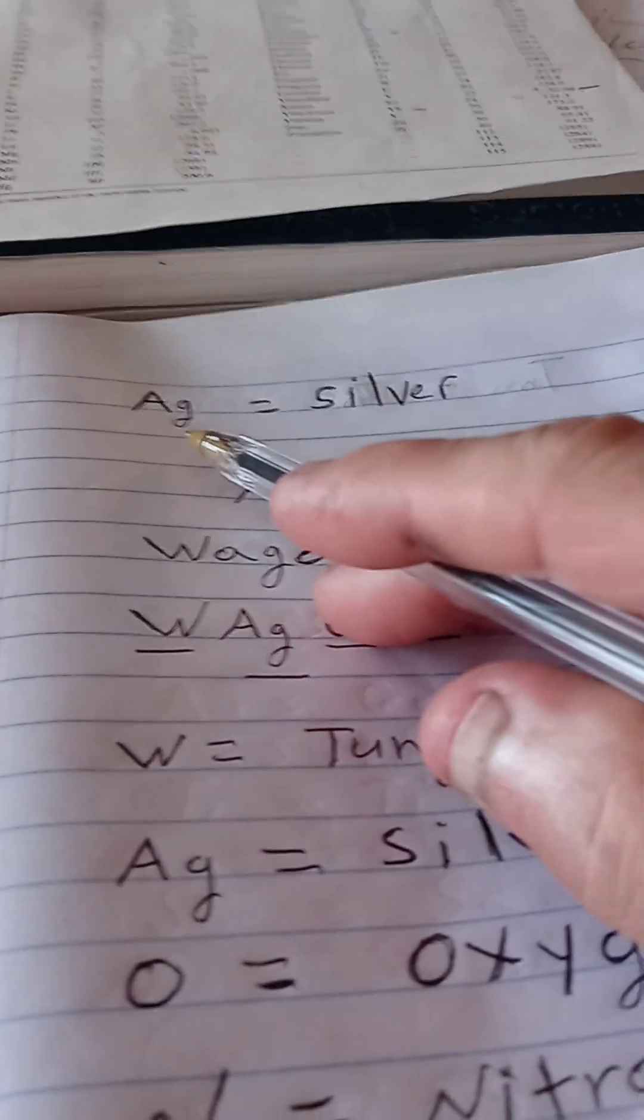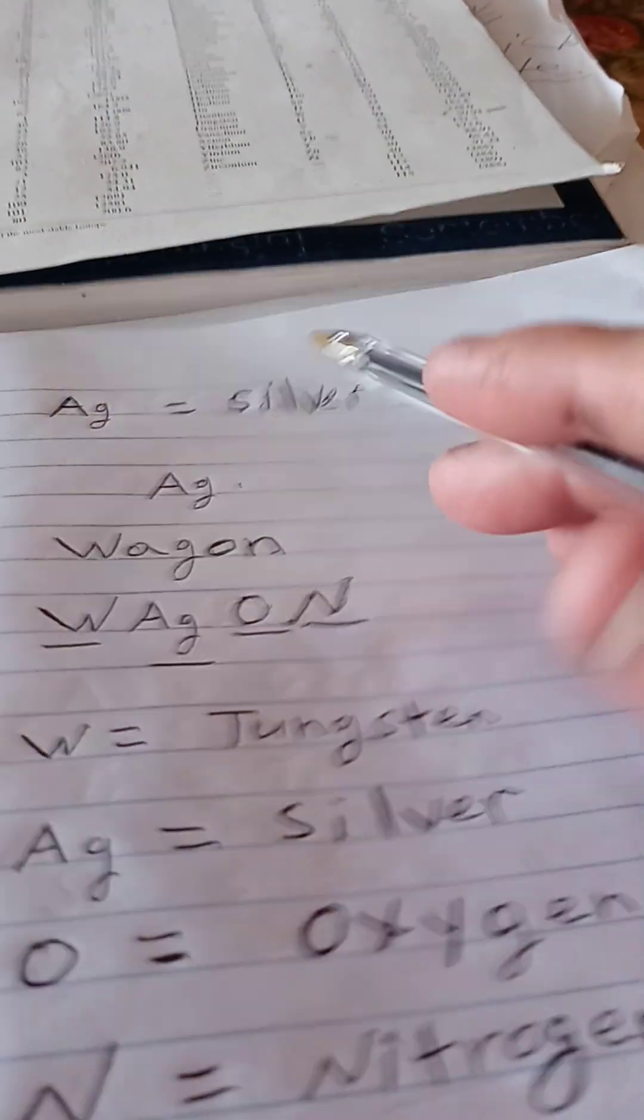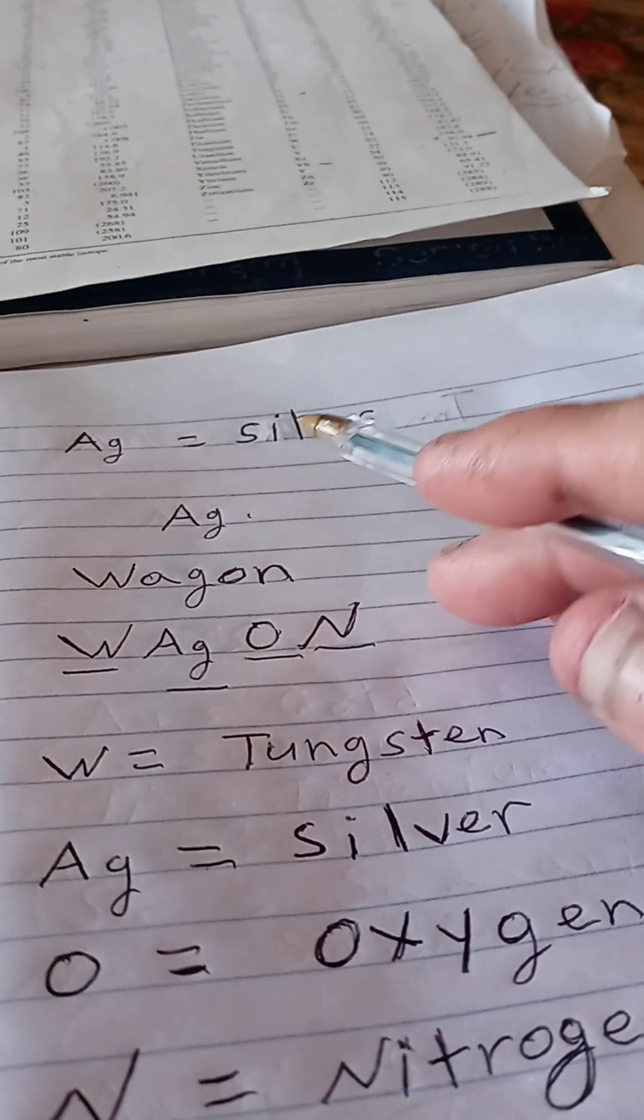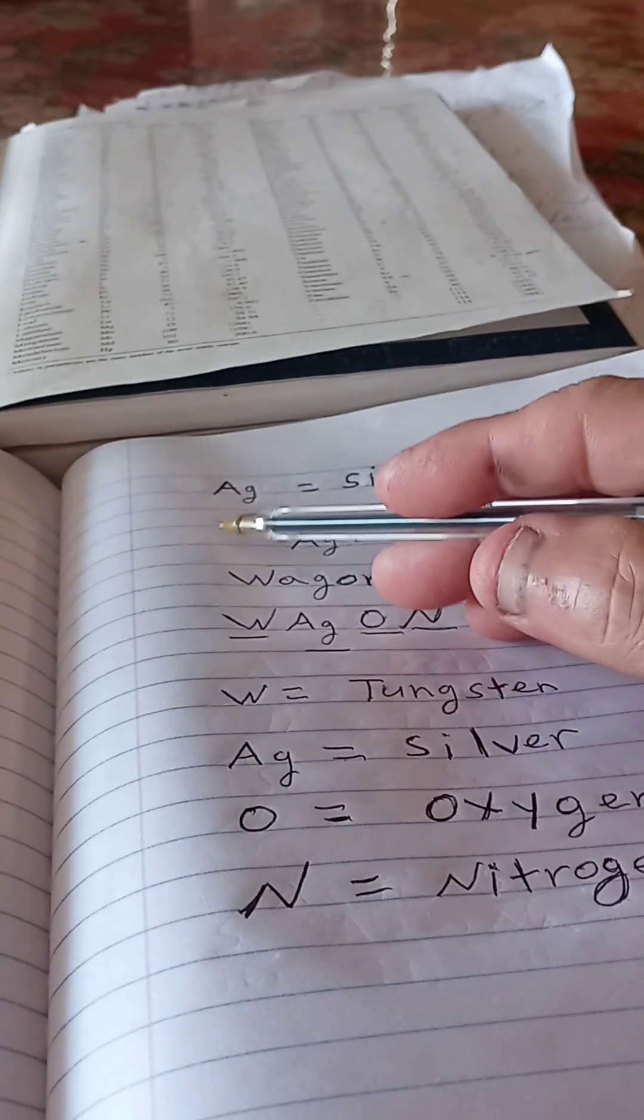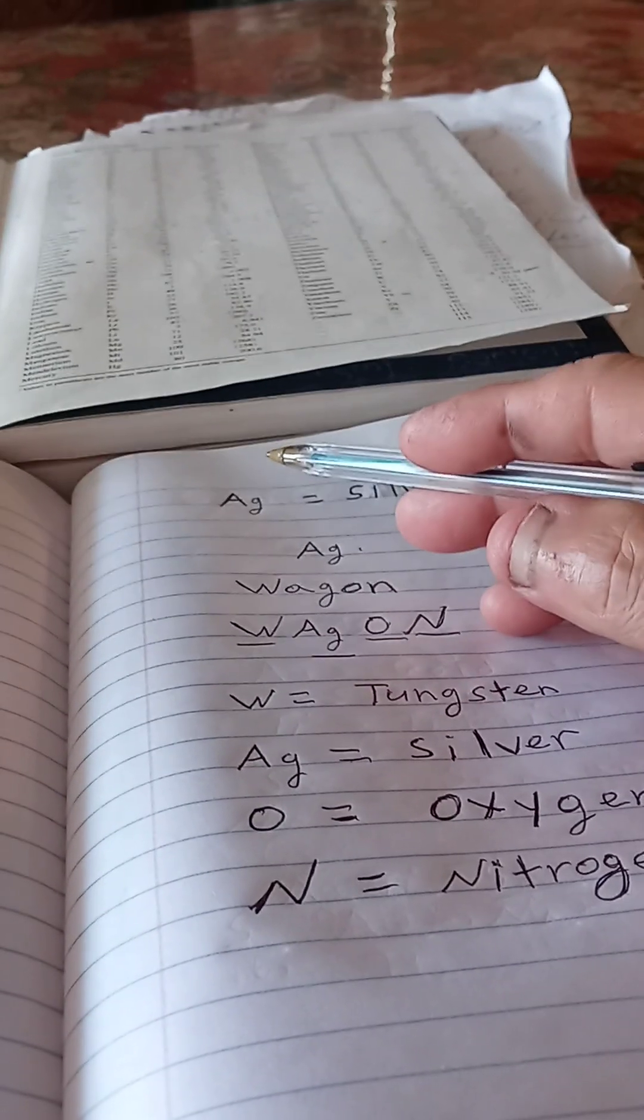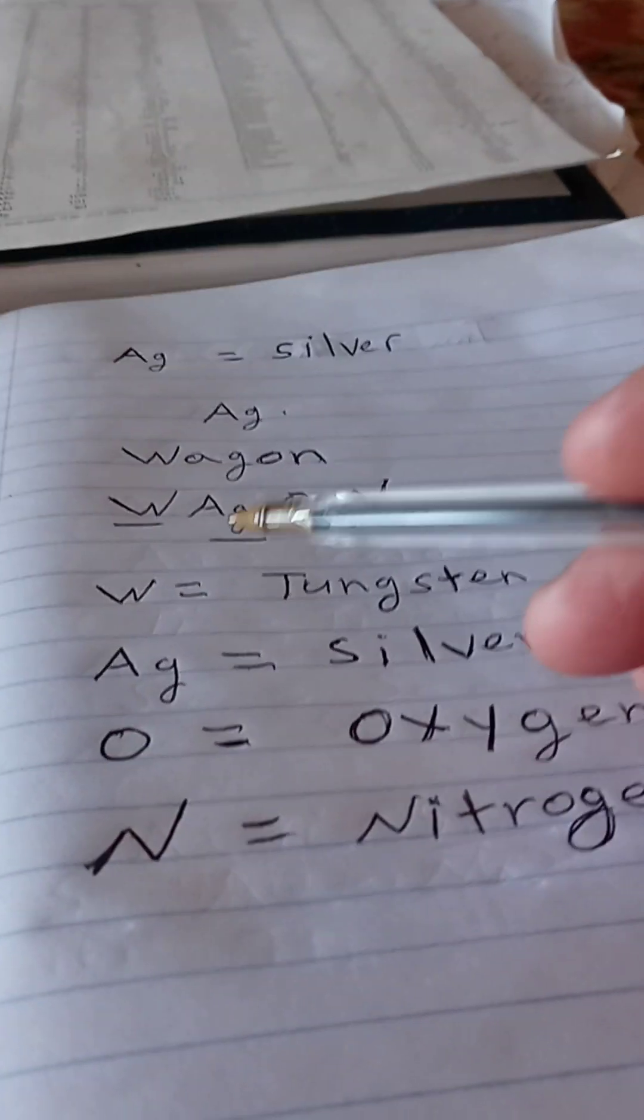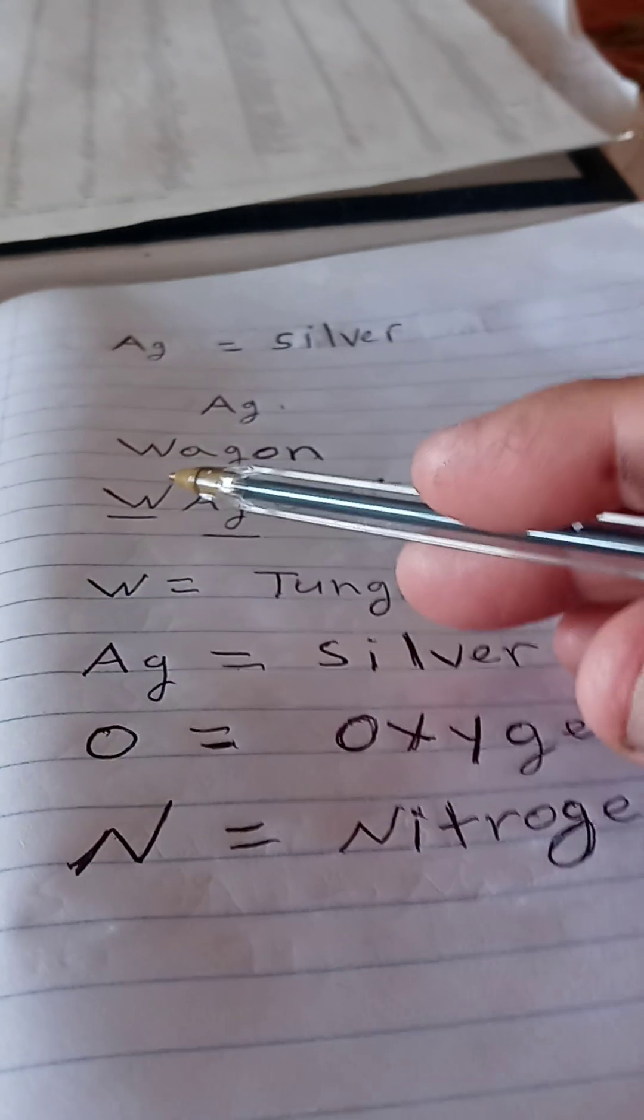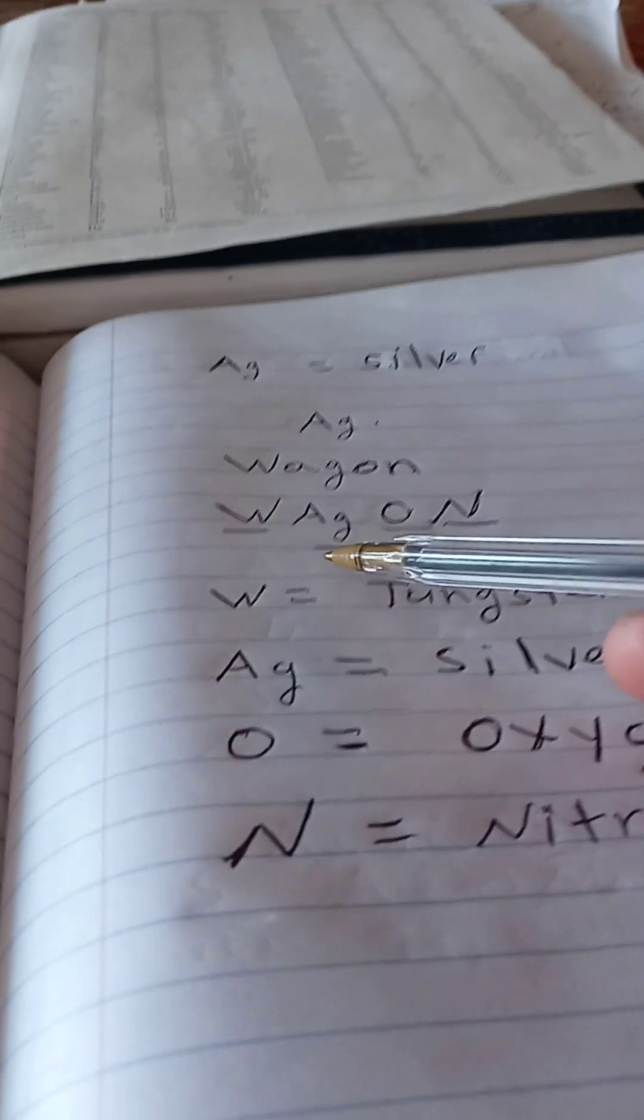For example, capital A and a small g equals silver, S-I-L-V-E-R. What you see, a chemical symbol for silver is capital A and a small g. A good word for that is wagon, W-A-G-O-N, wagon.